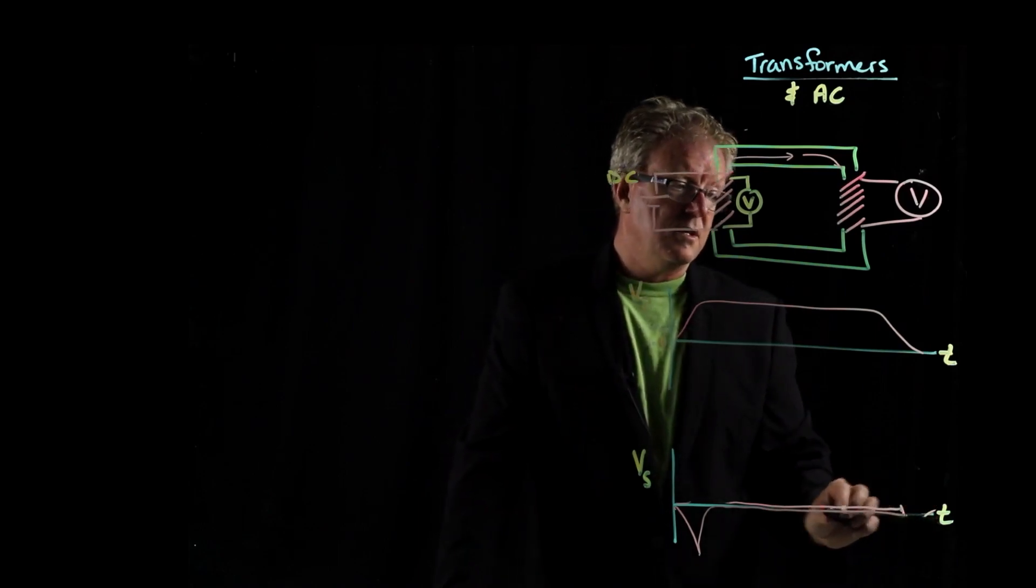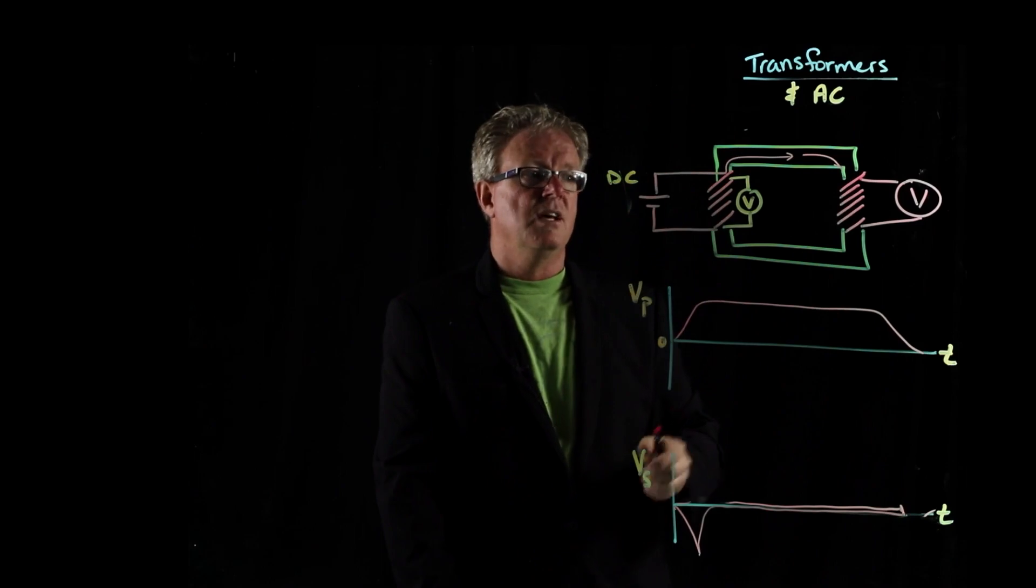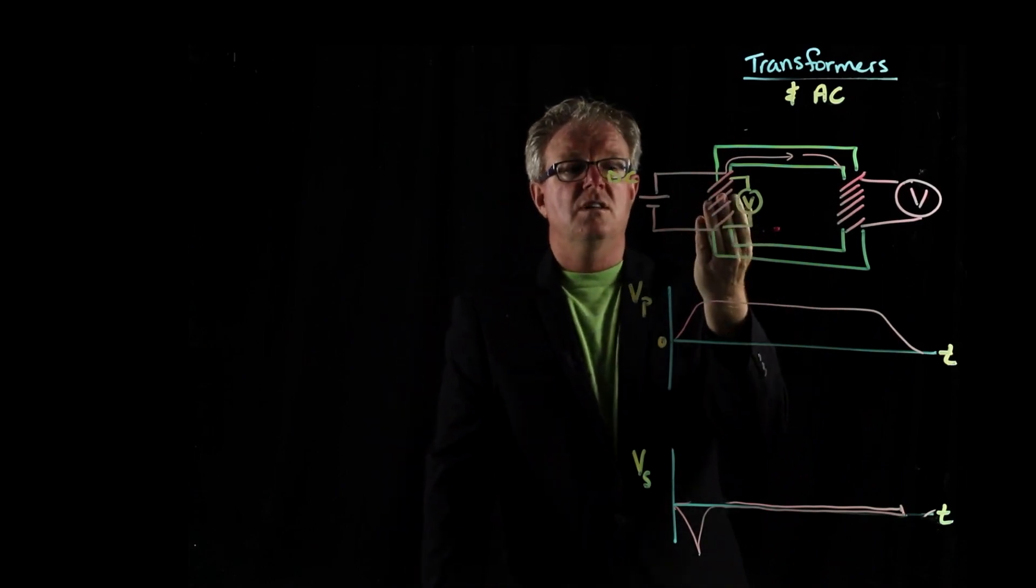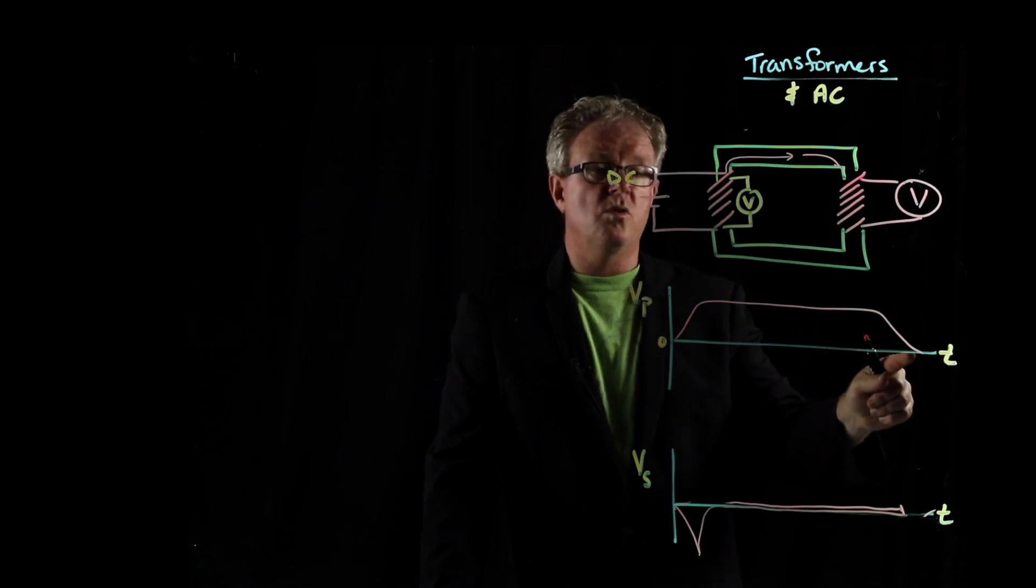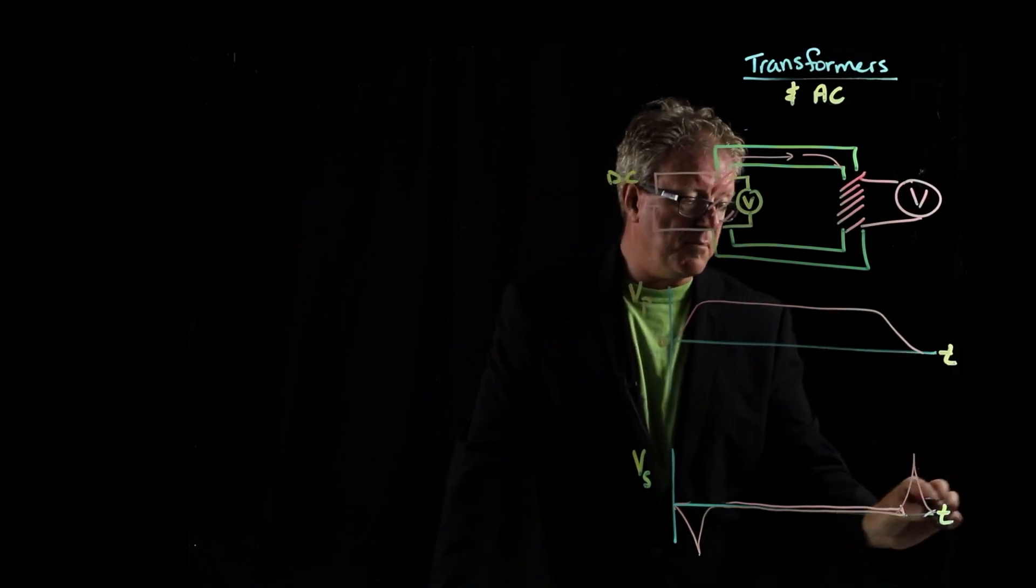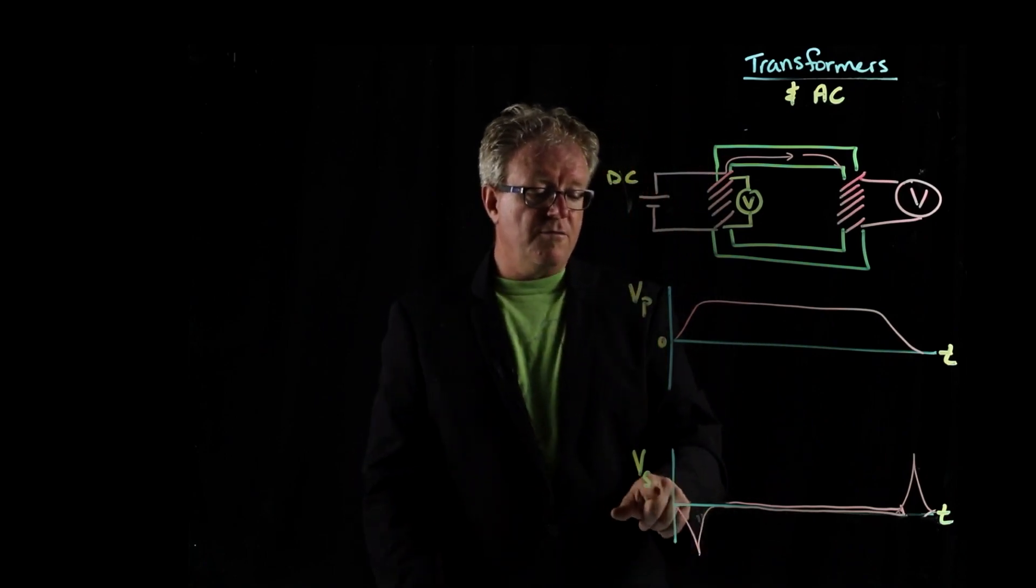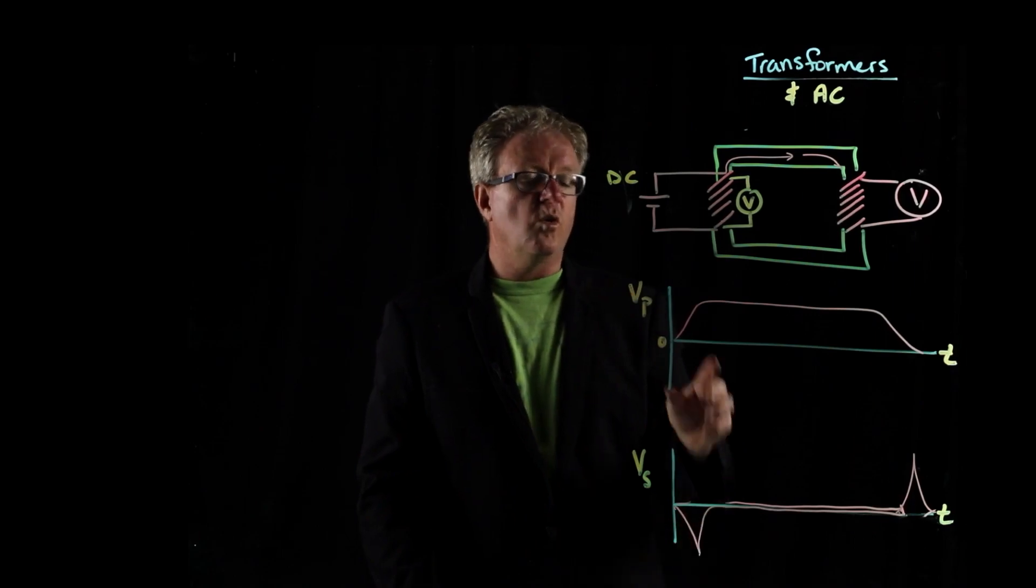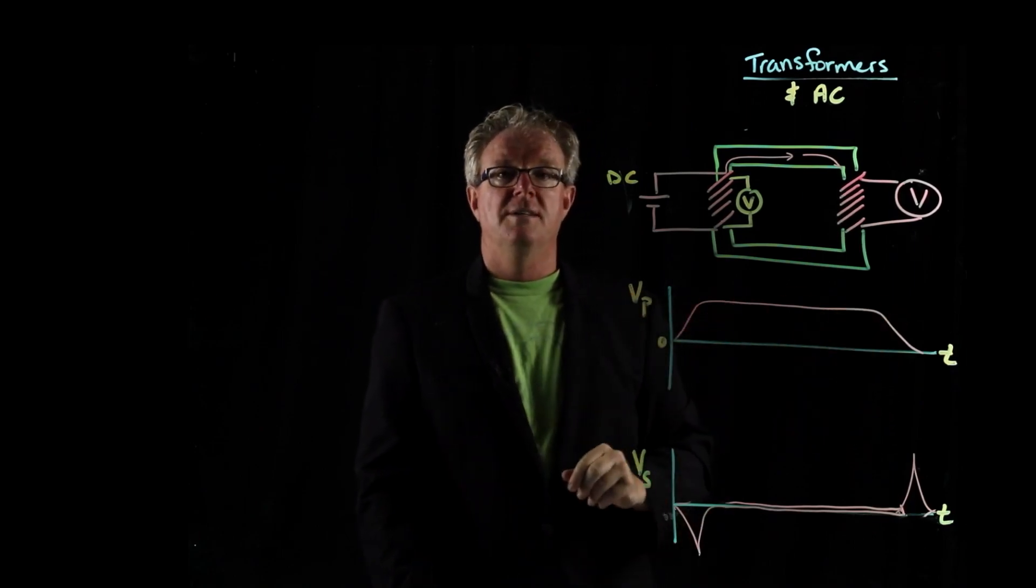And so when you disconnect the circuit, the voltage in the primary coil goes down. And then you'll see an opposite voltage spike happening in the secondary coil. So you only get voltage induced in the secondary coil when there is a change in flux initially turned on and turned off.